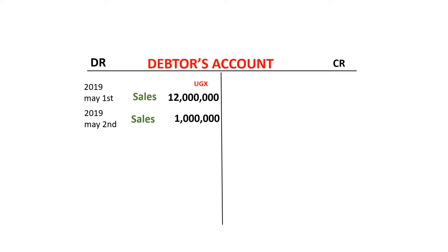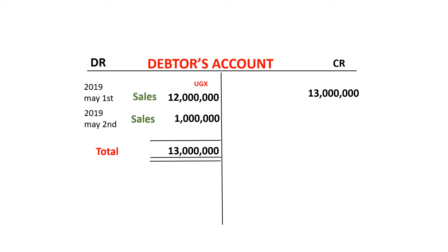The trading period is ongoing and this person owes the business money. Along the way this person comes and pays money, which means the debtor's account in your books is going to reduce because this person has paid the money owed. The debit side adds up to 13 million. When you receive that cash — because the debtor is now clearing the debt — you go ahead and credit the debtor's account with the 13 million that has been paid. The other item affected is cash. You realize that when you look at this account, the debit side and the credit side add up to the same total.